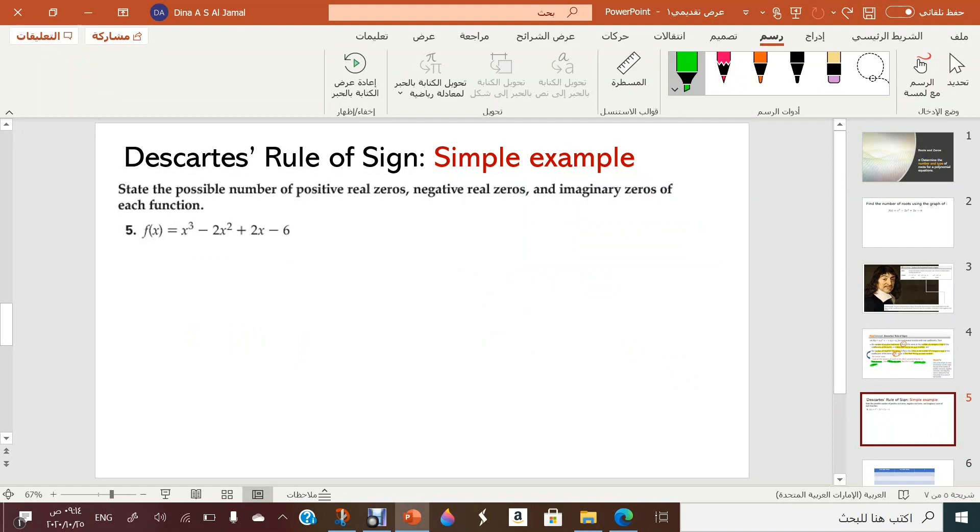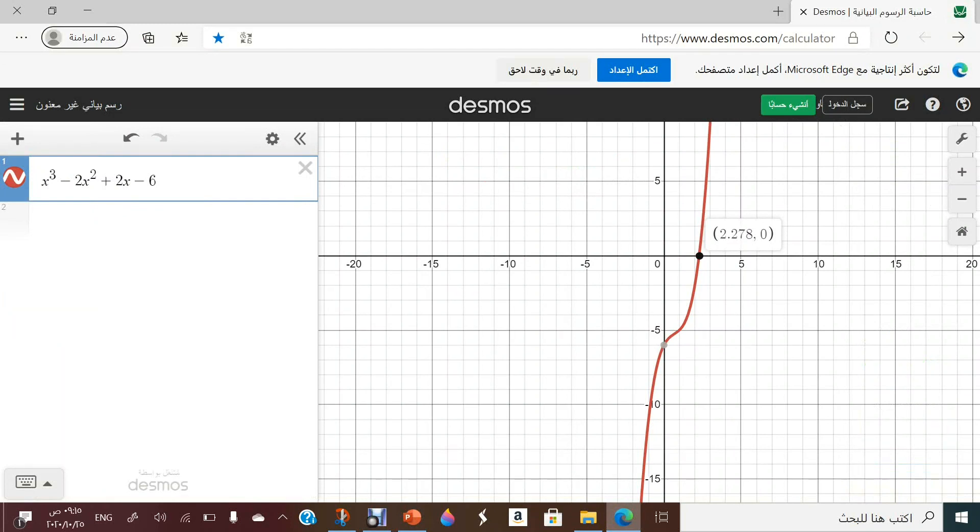Then I will be going to the example. I will be giving you a simple example. So Descartes rule of sign is telling me state the possible number of positive real zeros, negative real zeros, imaginary zeros of the given function. So it is the same function that we graphed here and we only found one root. Let's understand together where are the other two roots.